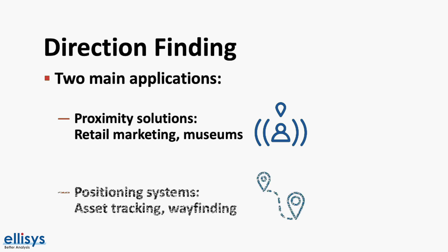Second, we have position systems such as real-time locating services (RTLS), which focus on understanding where devices are located within a space, usually indoors where GPS does not work very accurately. Examples include asset tracking, user tracking, and wayfinding solutions.